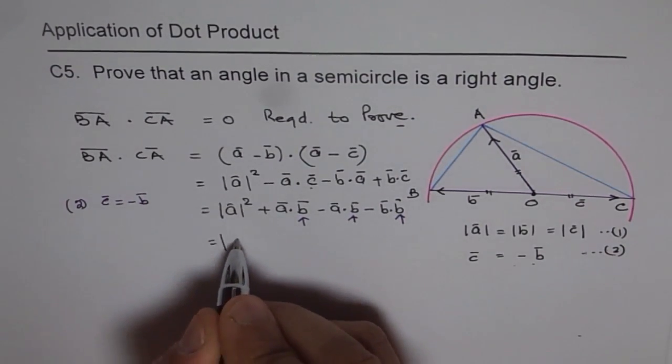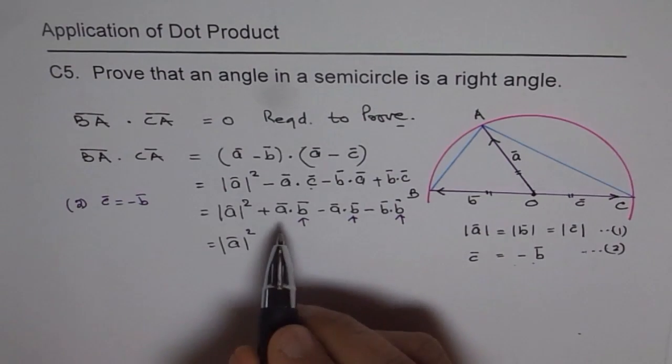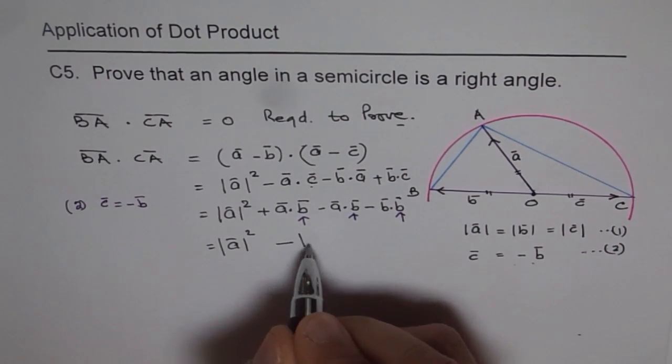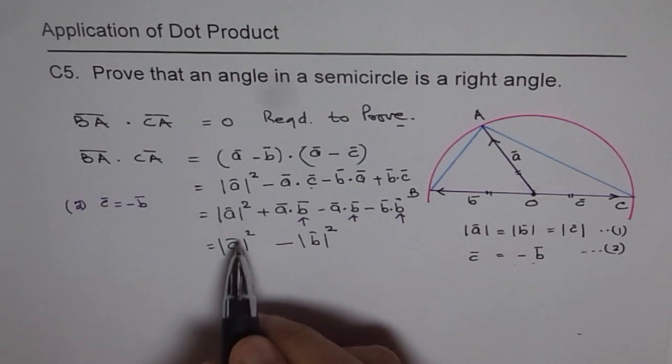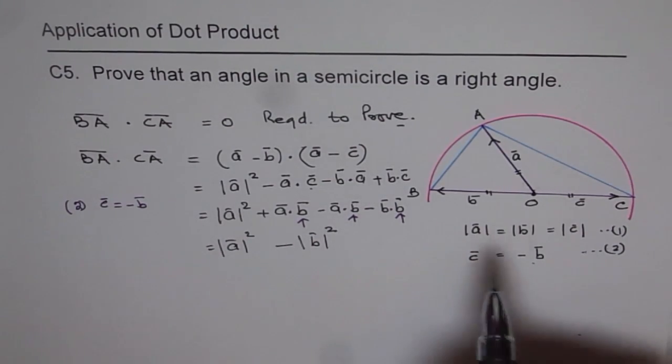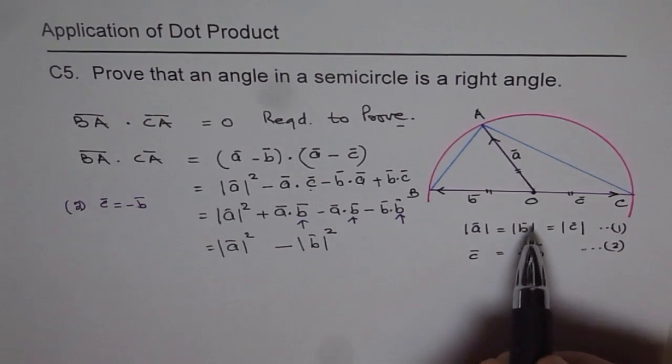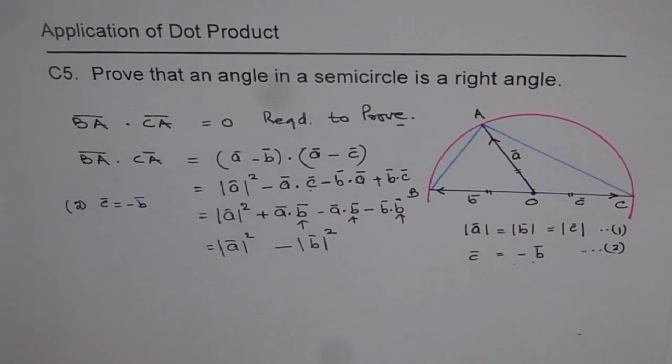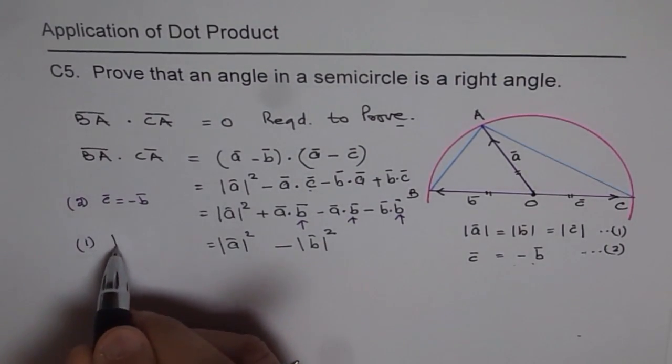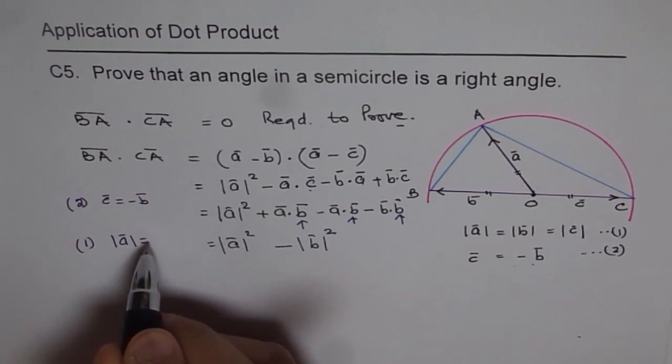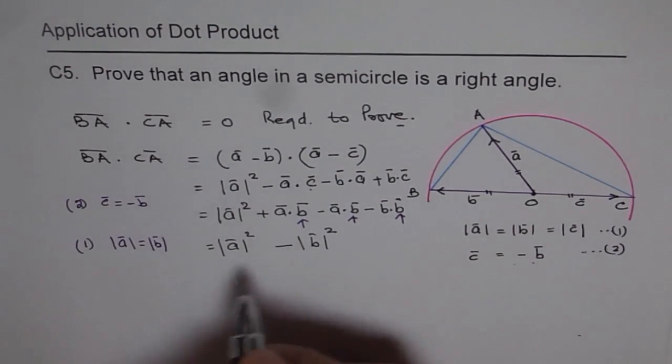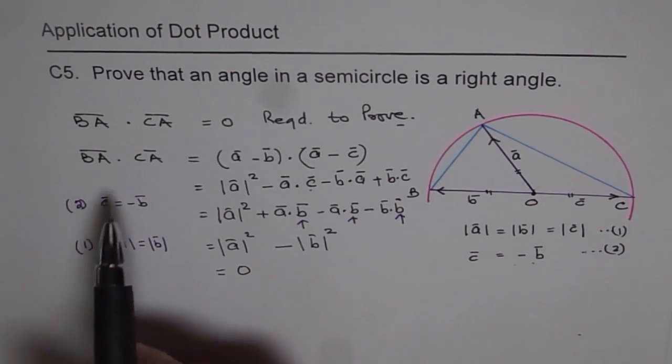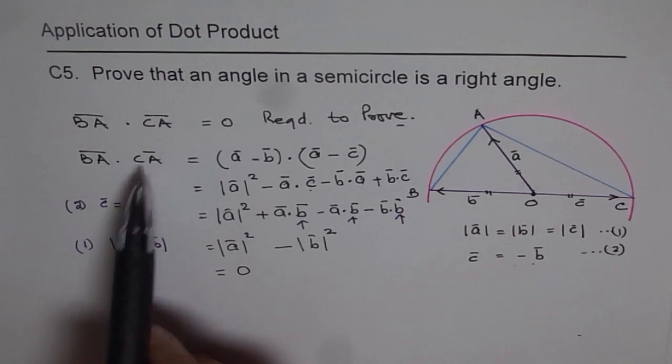Now as we move on, what do we get? We get A square, and plus A dot B minus A dot B is zero, and this is magnitude of B square. So we get A square minus magnitude of B square. Now magnitude of A and B are same since they are the radius of this circle. Since we know from equation one that magnitude of A equals to magnitude of B, therefore we can conclude from here that this is equal to zero. So in a way we proved that BA dot CA is zero.